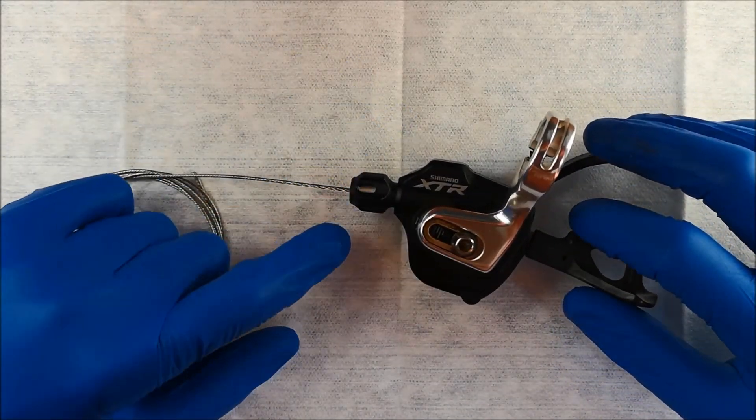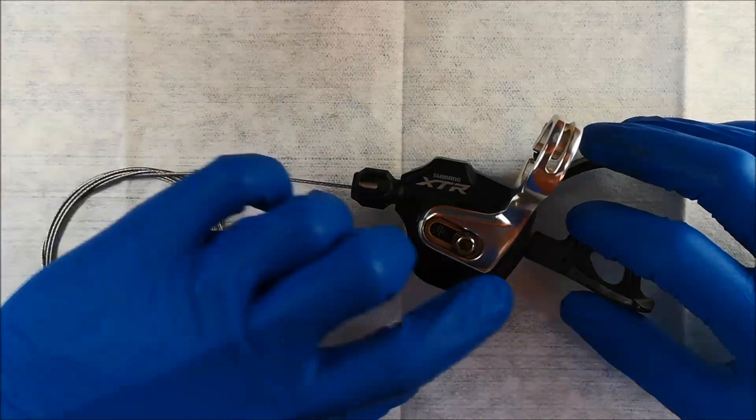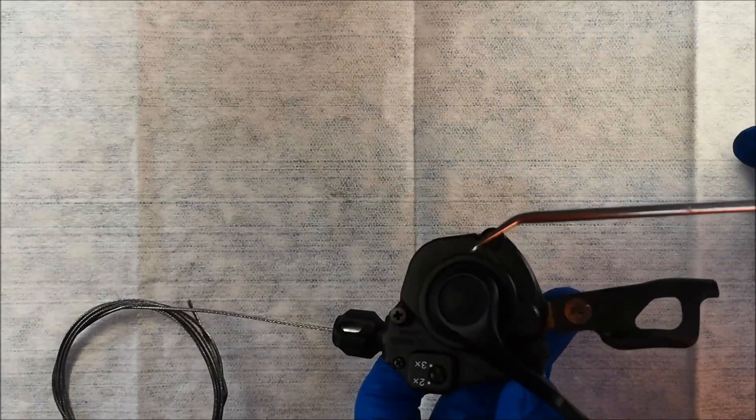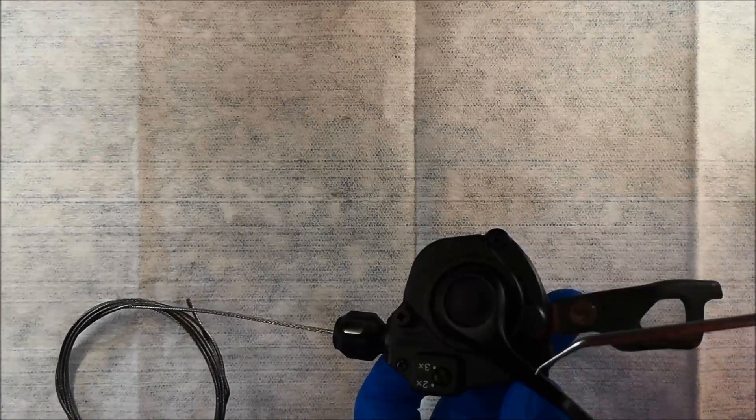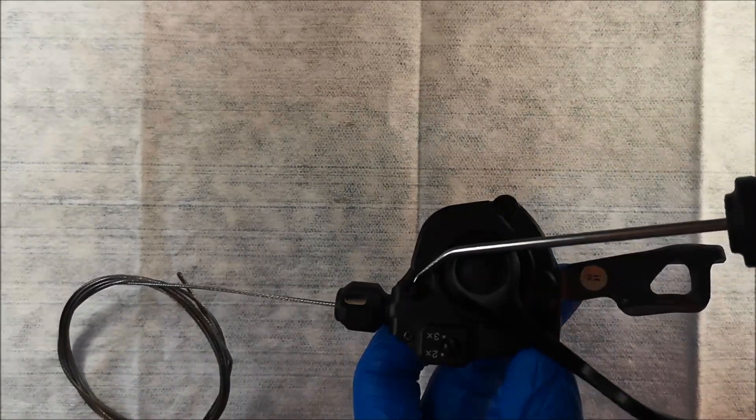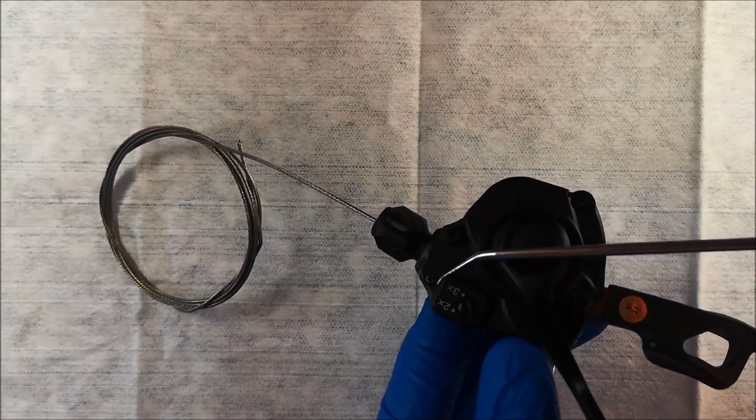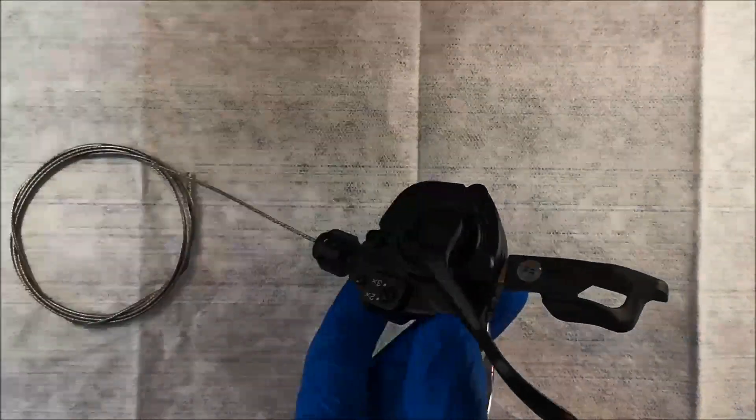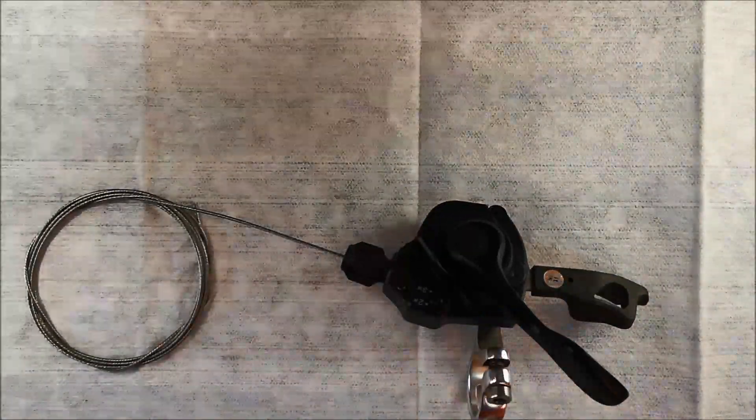First things first, you're going to remove the barrel adjuster. You're going to remove this little screw here, there's this one here, one here behind the shifter paddle, and one there, and one here where the indicator changes from 2x to 3x. So quickly remove all those screws and then you can separate the shifter.